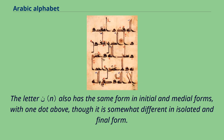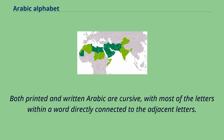The letter Noon also has the same form in initial and medial forms, with one dot above, though it is somewhat different in isolated and final form. Both printed and written Arabic are cursive, with most of the letters within a word directly connected to the adjacent letters.